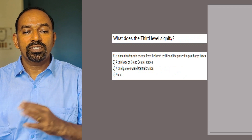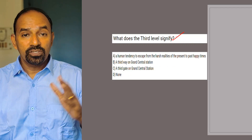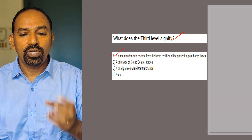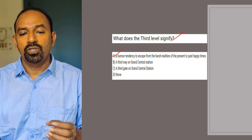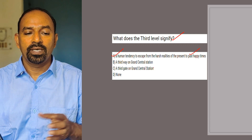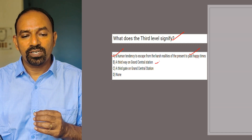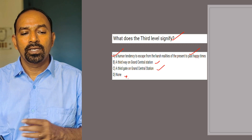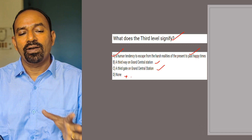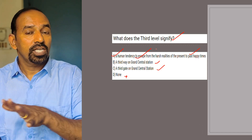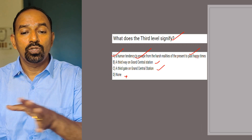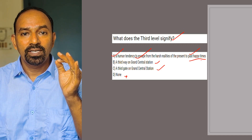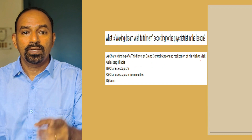Next question: What does the third level signify? Options: a human tendency to escape from the harsh realities of the present to past happy times; a third way on Grand Central Station; a third gate on Grand Central Station; none. The third level signifies a human tendency to escape from the harsh realities of the present to the past happy times.